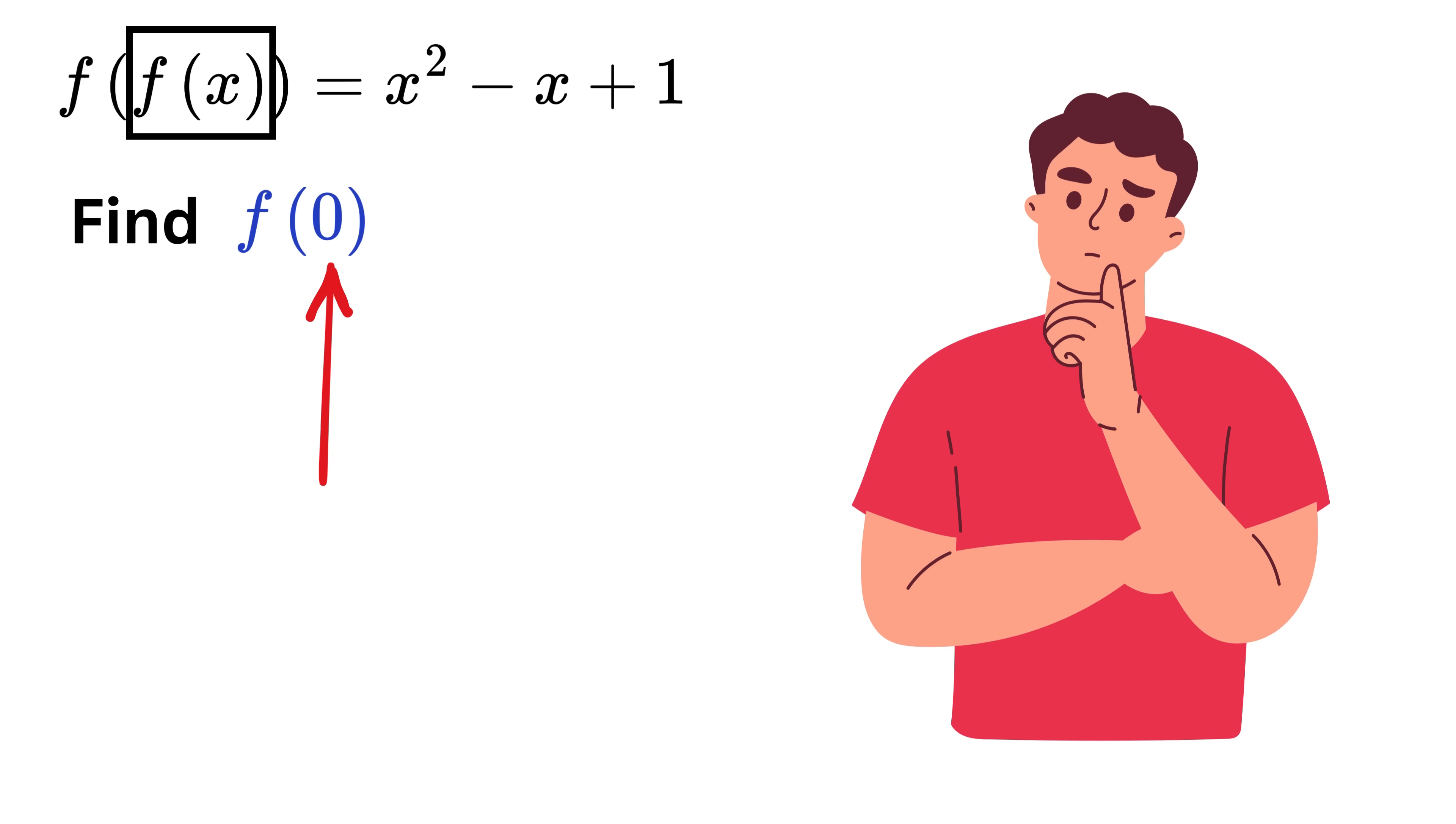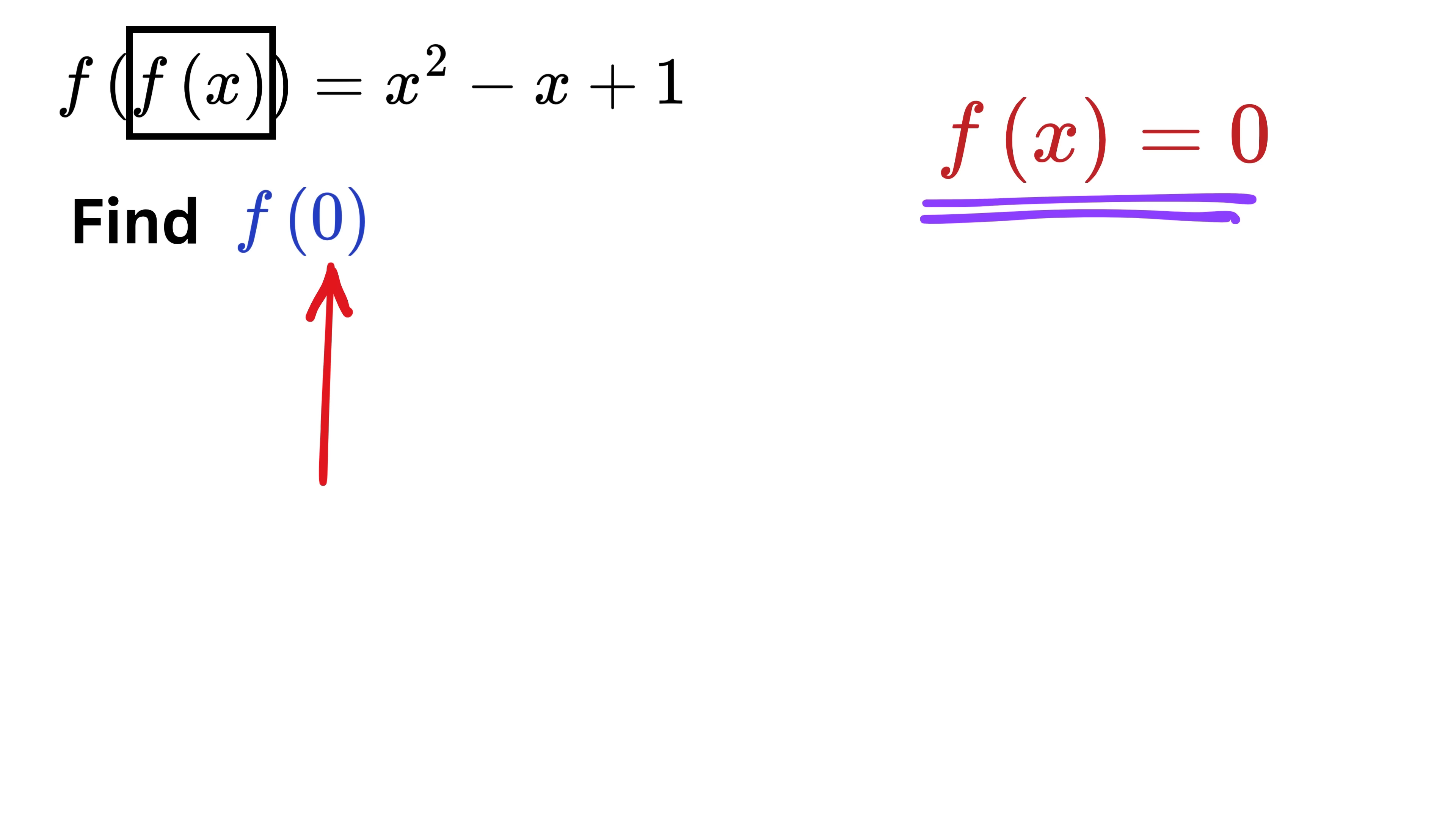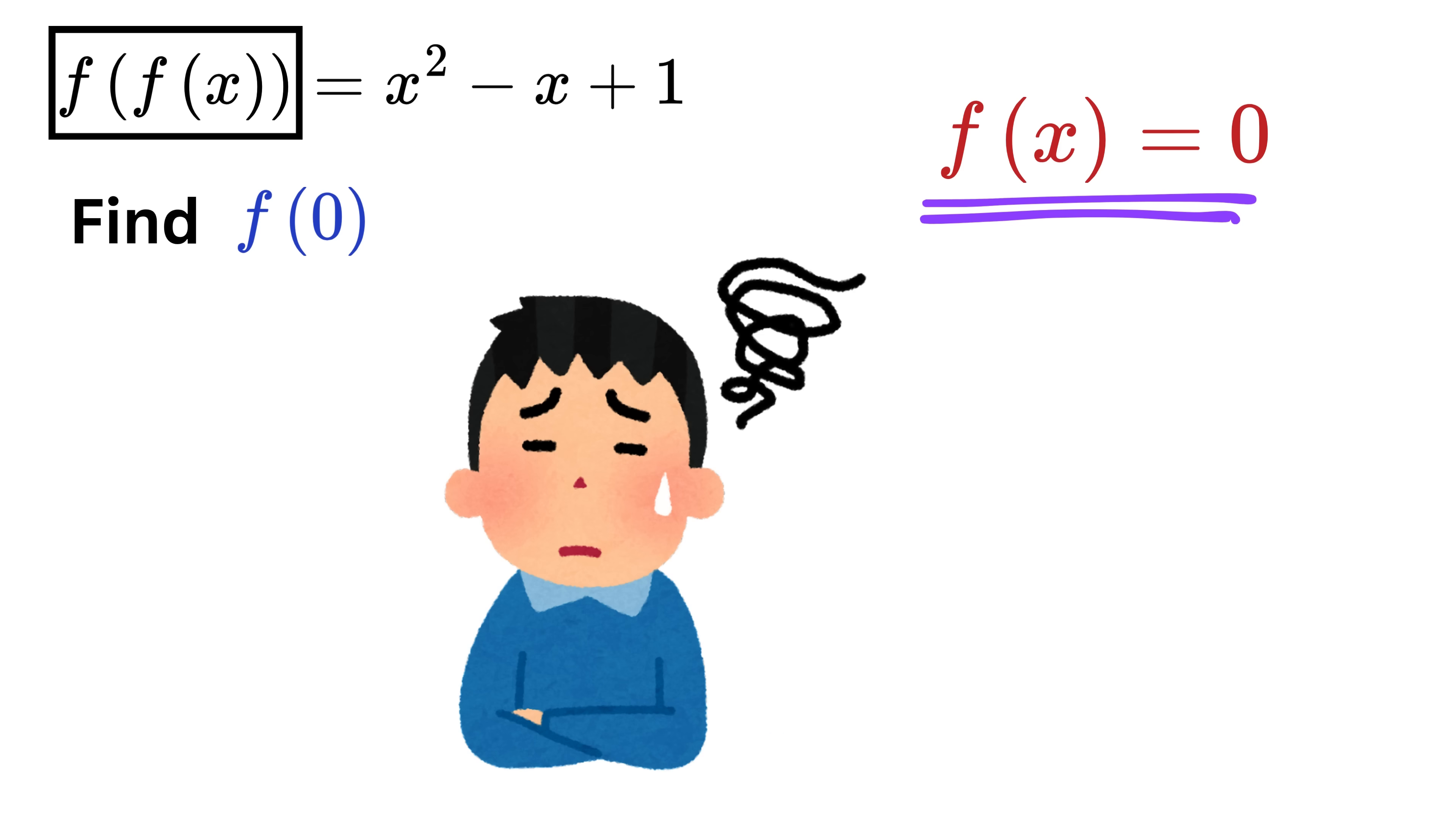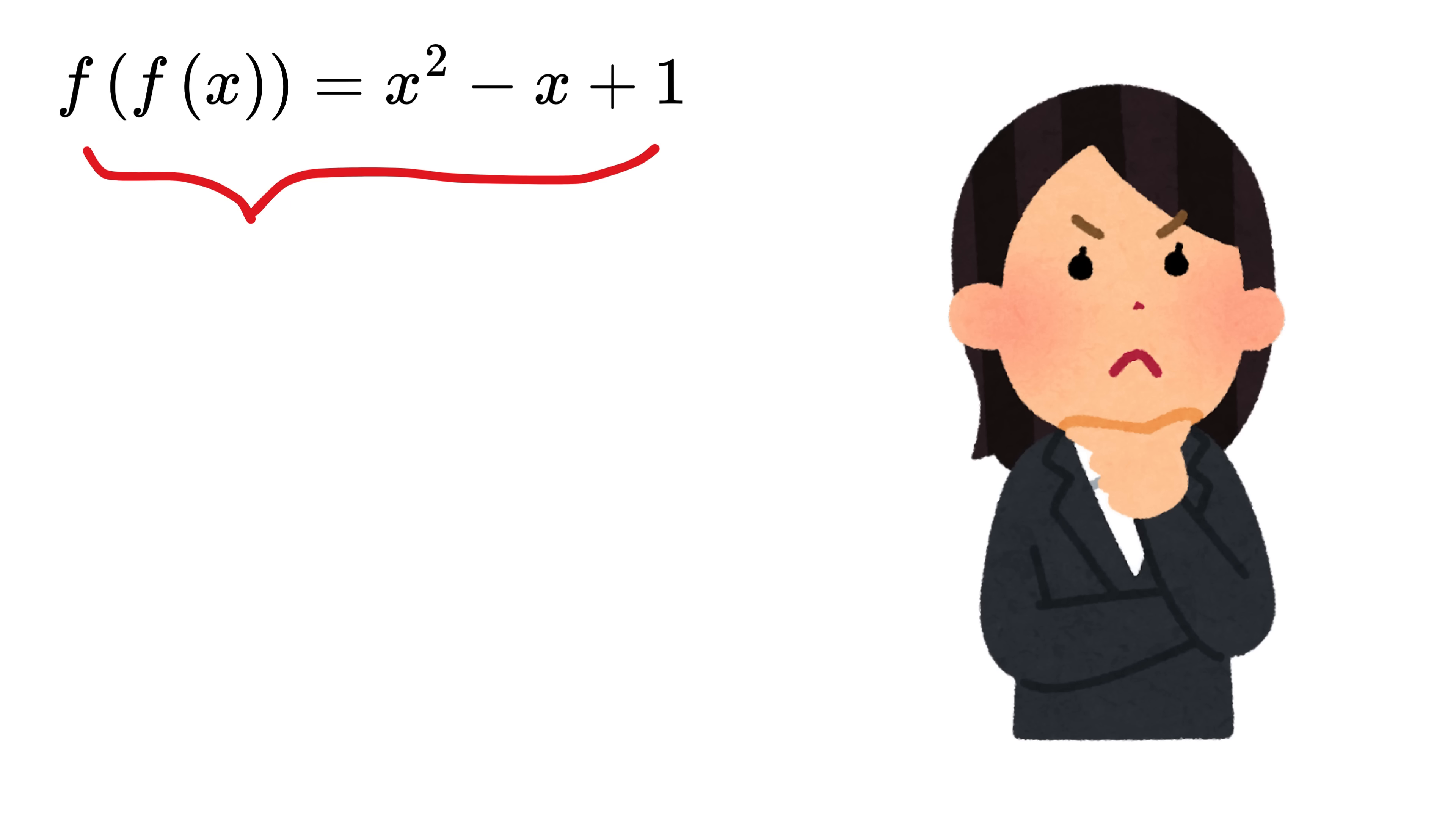So what is the first step that comes to our mind? Yes, we need to equate f of x to 0. But hey, there's a problem here. We don't actually know what f of x is yet. The question only gives us f of f of x, but it never tells us the direct formula for f of x. So we can't just plug in f of x equal to 0 directly. Instead, we have to work smartly. We'll use the given information and maybe start by substituting some simple values for x, like 0 or 1.